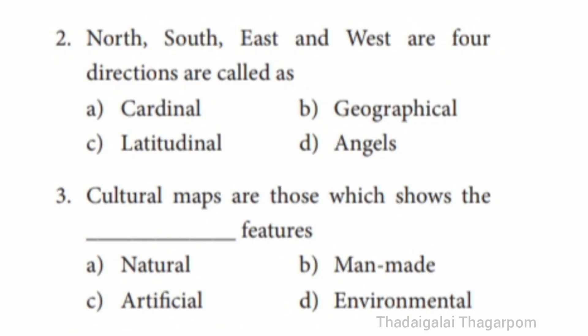Question 2: North, South, East and West – four directions are called as – Cardinal, Geographical, Latitudinal, or Angles. The correct answer is Cardinal. North, South, East and West four directions are called Cardinal.